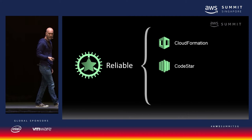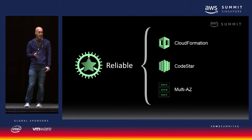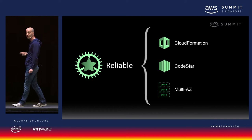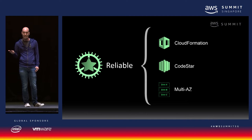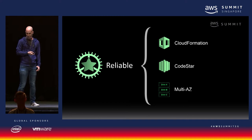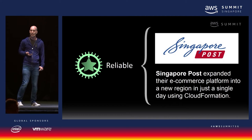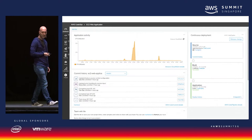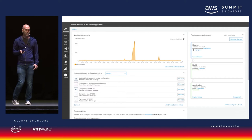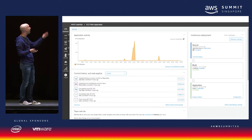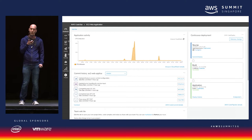On redundancy: we have a third availability zone recently added to Singapore, which lets you run quorum services like Kafka or Cassandra. We also use it for Amazon Aurora, our fastest growing database service, to make sure your data is well protected and highly available. Singapore Post managed to expand into an entirely new region in a single day because they were using CloudFormation. Here's a screenshot of CodeStar in action — the dashboard shows application activity, recent code commits, and on the right-hand side, a build pipeline set up automatically showing the status of builds and deployments.